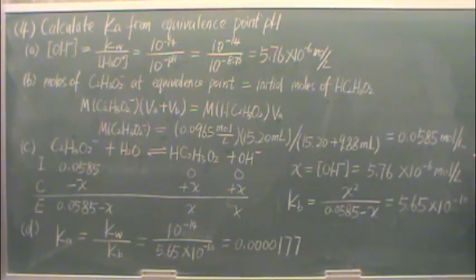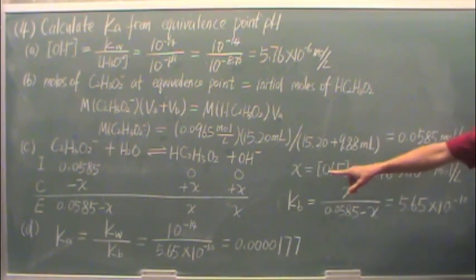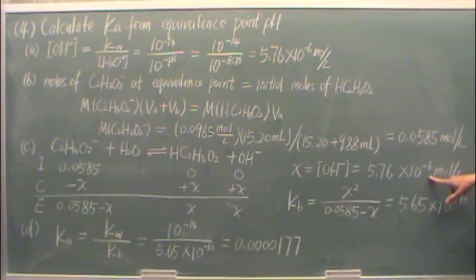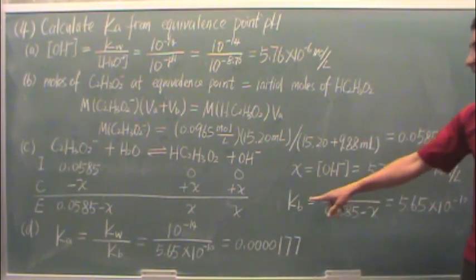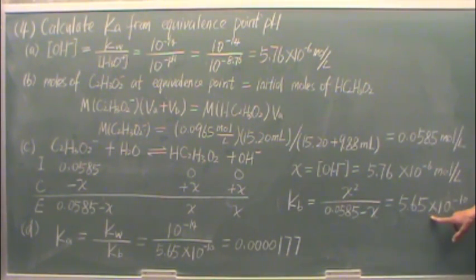And then notice over here to the right, we know x, that's the hydroxide ion concentration, that's this value right there. It's this number, so when you plug in Kb, which is x squared over the molarity minus x, you're going to put x in there and you'll get this number for Kb.